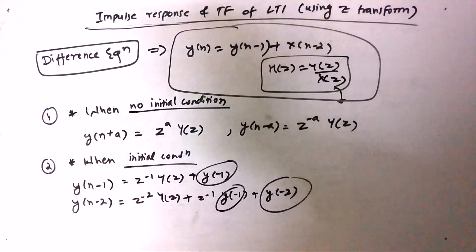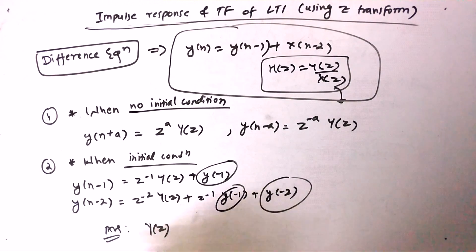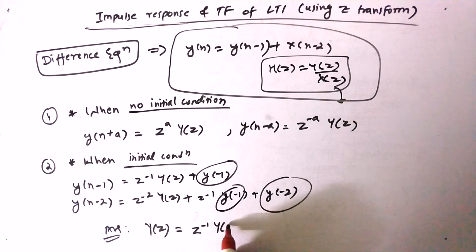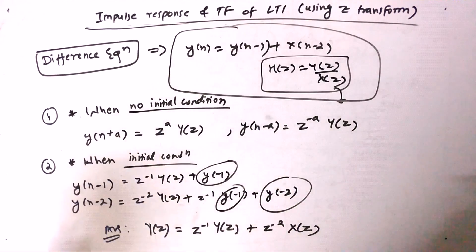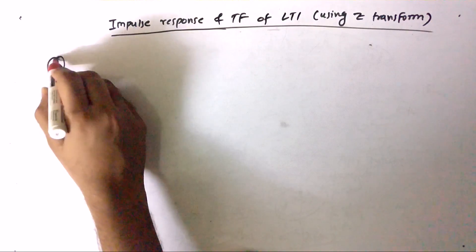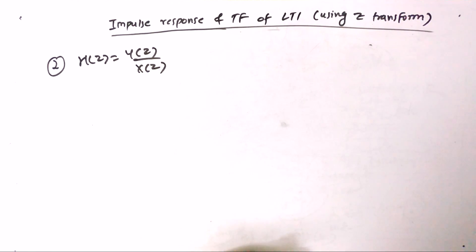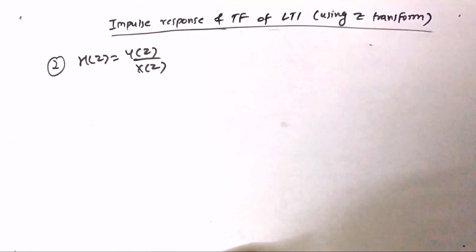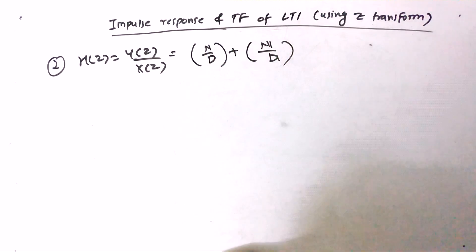Applying to our example with no initial conditions: Y(Z) = Z^(−1) Y(Z) + Z^(−2) X(Z). From this, our first point — the difference equation — is clear. Now using the difference equation we can find H(Z), which is Y(Z) by X(Z). When we then need to find H(N), we must use partial fractions to divide H(Z) into simpler terms. Let's see by an example.